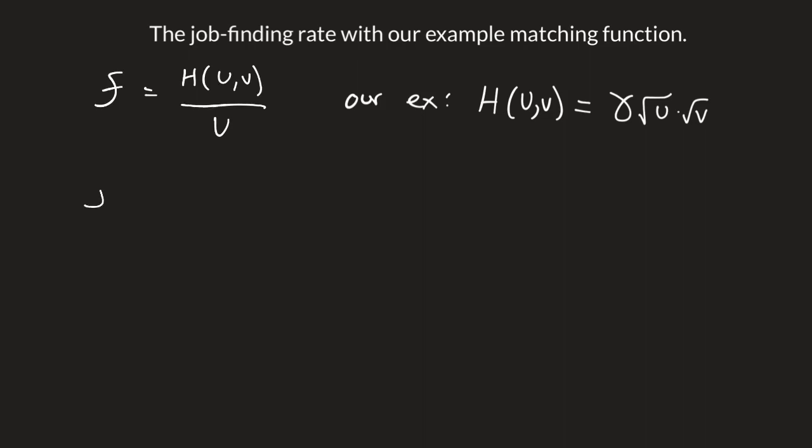So if we plug that in, the job finding rate is gamma*sqrt(u)*sqrt(v) divided by u. We're going to use exponent rules. I'll rewrite this as gamma*u^0.5*v^0.5 divided by u.